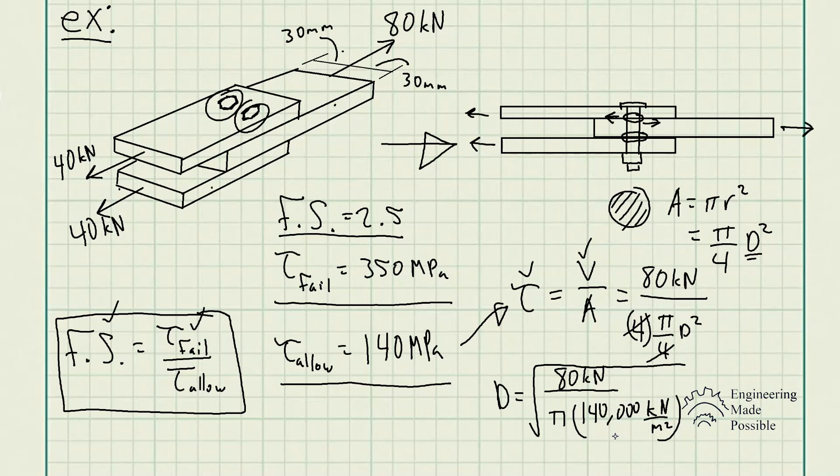The unit of pascals is newtons per meter squared. In this case, 140 megapascals is equivalent to 140,000 kilopascals, and I went ahead and converted it to kilonewtons per meter squared such that we actually get unit cancellation.